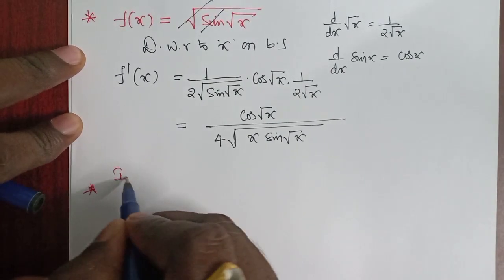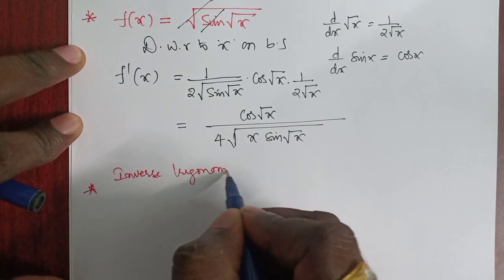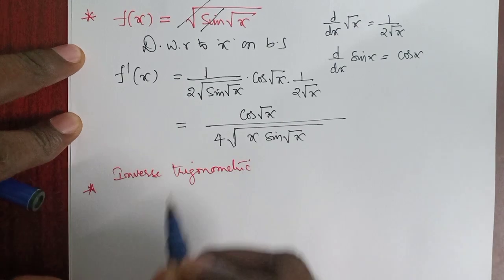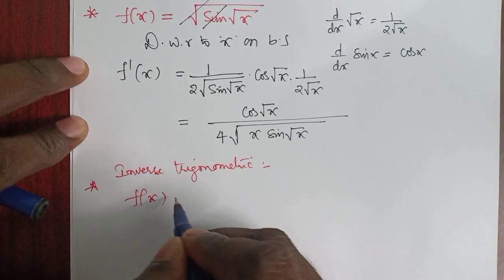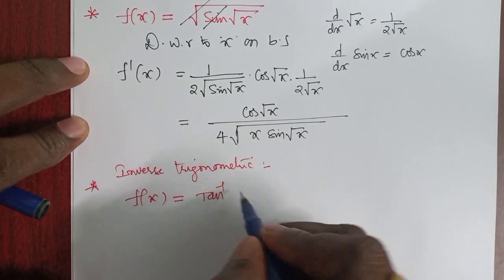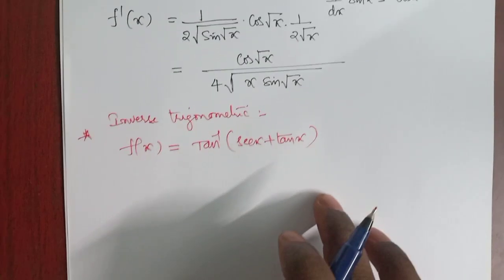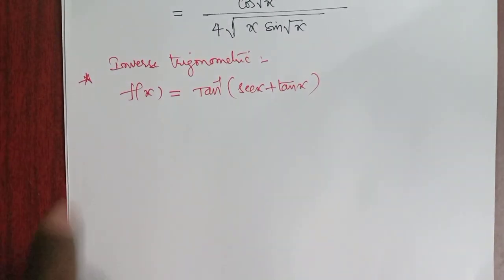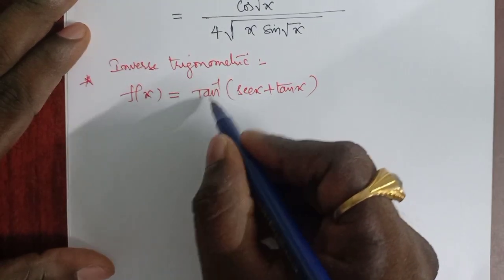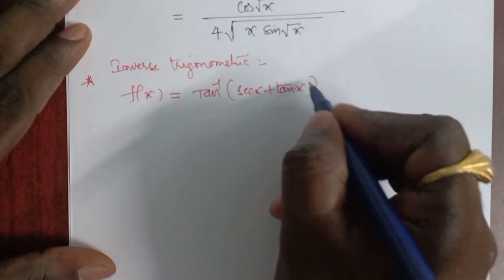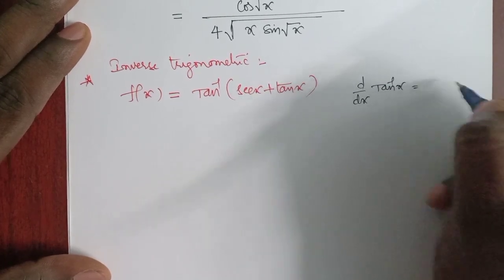Now coming to the second type: inverse trigonometric functions. Consider f(x) = tan⁻¹(sec x + tan x). This is a composite function — we have tan⁻¹ with (sec x + tan x) in place of x.